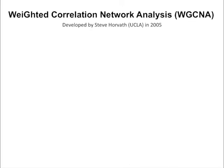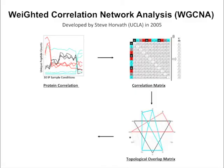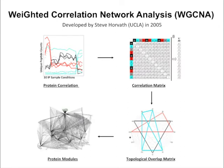A major advance of our current study is the construction of Huntington interacting protein modules using Weighted Correlation Network Analysis, or WGCNA. To construct a correlation network for Huntington interactors, we used unique peptide counts for each protein across all 30 different IP experiments as inputs. The WGCNA program first computes the pairwise correlation coefficients between the proteins. Next, the correlation matrix is transformed into a weighted network using a soft thresholding approach. Finally, modules of highly correlated proteins are defined as clusters of highly interconnected proteins.